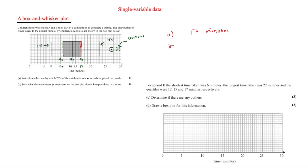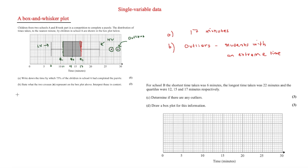Part B asks: state what the two crosses represent on the box plot and interpret them in context. These are the outliers — students with an extreme time. They are students who exceeded what was average by far, completely over what would be average, and they would skew the data if we were to include them.